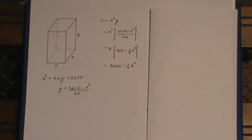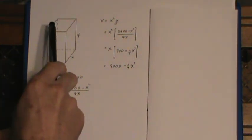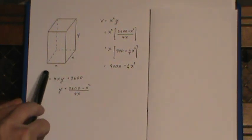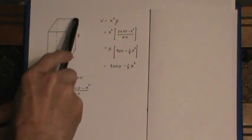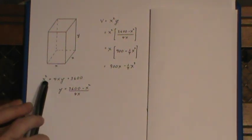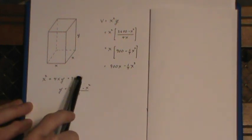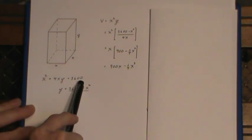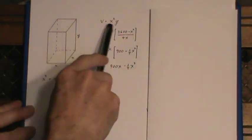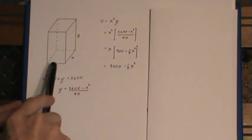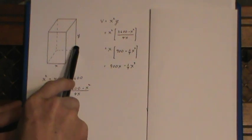Now because the box is open at the top we just have the area of the base. If the box was closed I'd have a two here because there'd be a top and a bottom. Four sides each x by y and that total surface area is 3600. The volume which we want to maximize is simply the area of the base times the height.